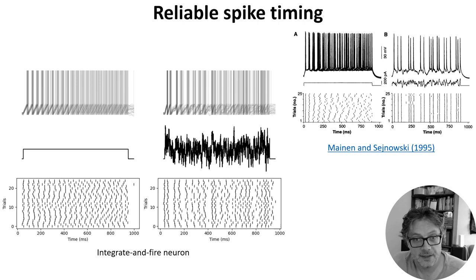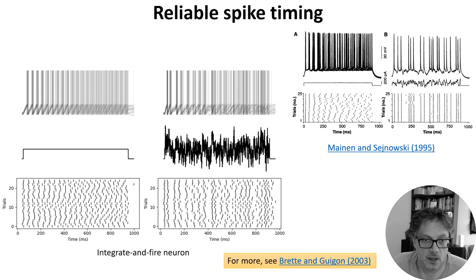In other words, adding the leak made the neuron more robust to noise, and that's an important property for the brain, and perhaps also for low-power neuromorphic hardware that we'll talk about later in the course.